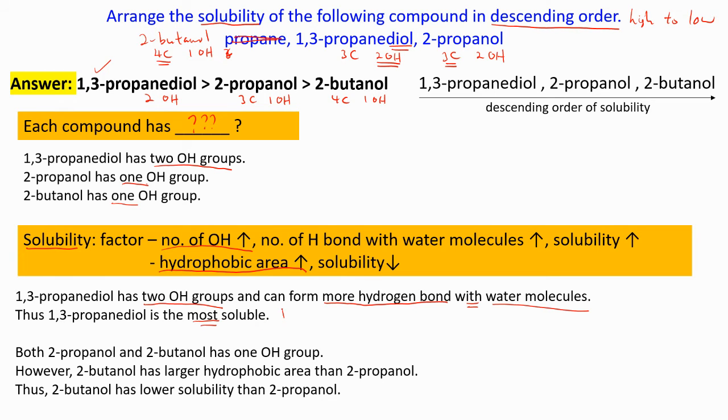The similarity between 2-propanol and 2-butanol is that they have 1-OH group. But what do we compare? We compare hydrophobic area. 2-butanol has larger hydrophobic area than 2-propanol. Thus 2-butanol has lower solubility than 2-propanol.